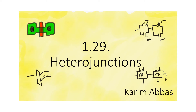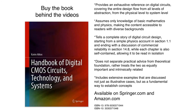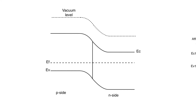If we form a junction between two different materials, how do we draw the equilibrium band diagram? Looking at the equilibrium band diagram of a P-N junction, we see the vacuum level for the first time, and the vacuum level here is continuous. This is one of the things that must happen in any band diagram, whether in equilibrium or not — the vacuum level has to be continuous.